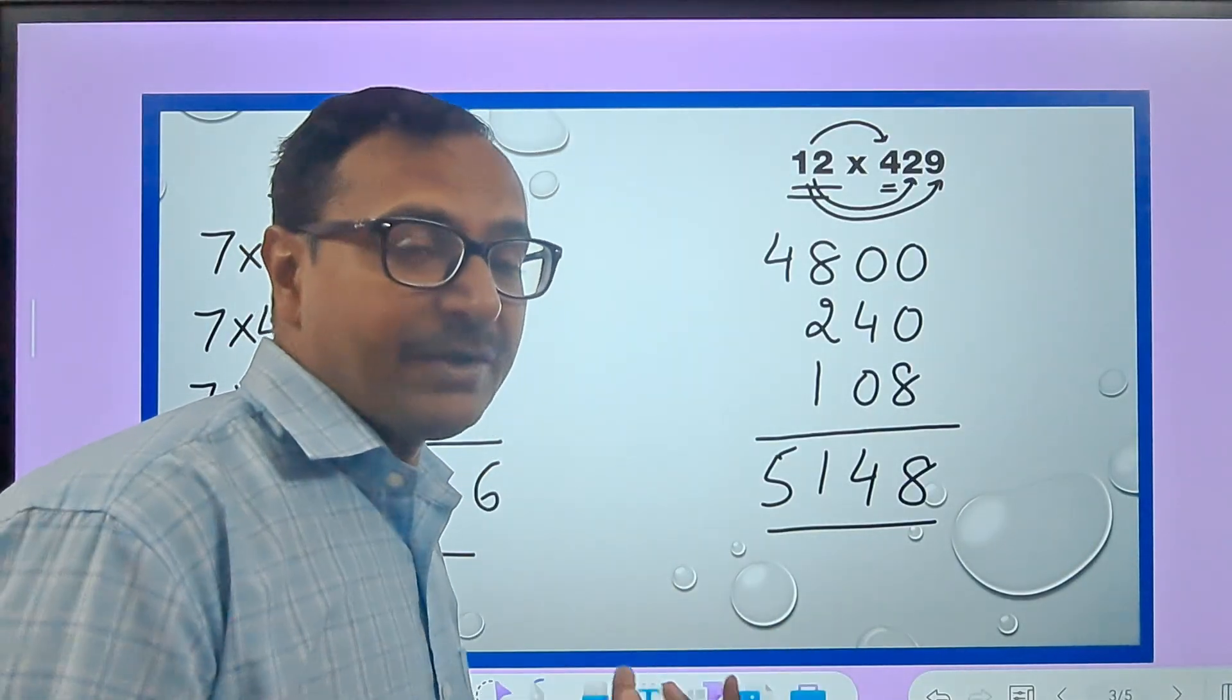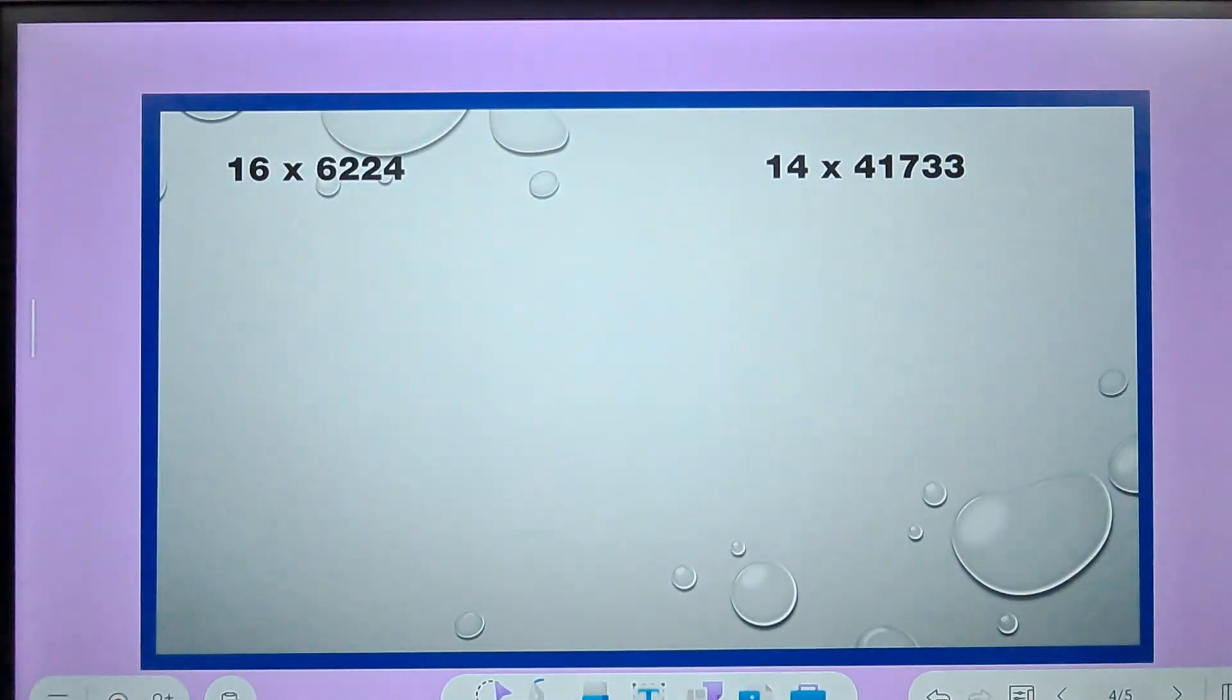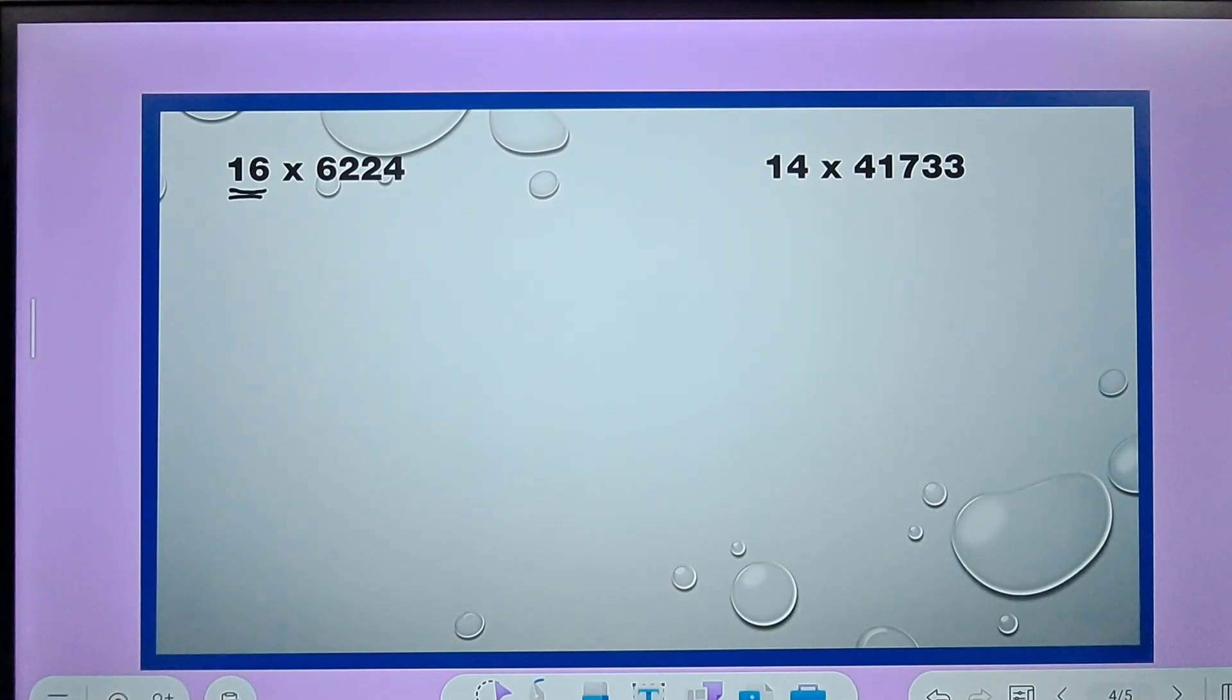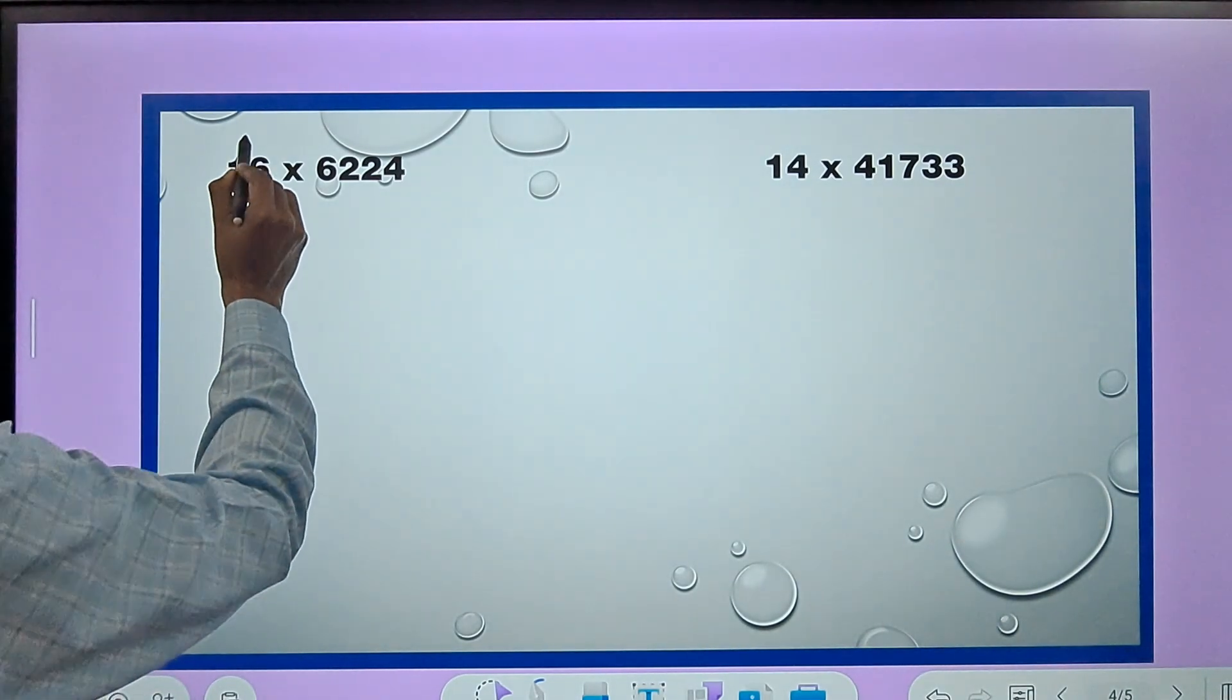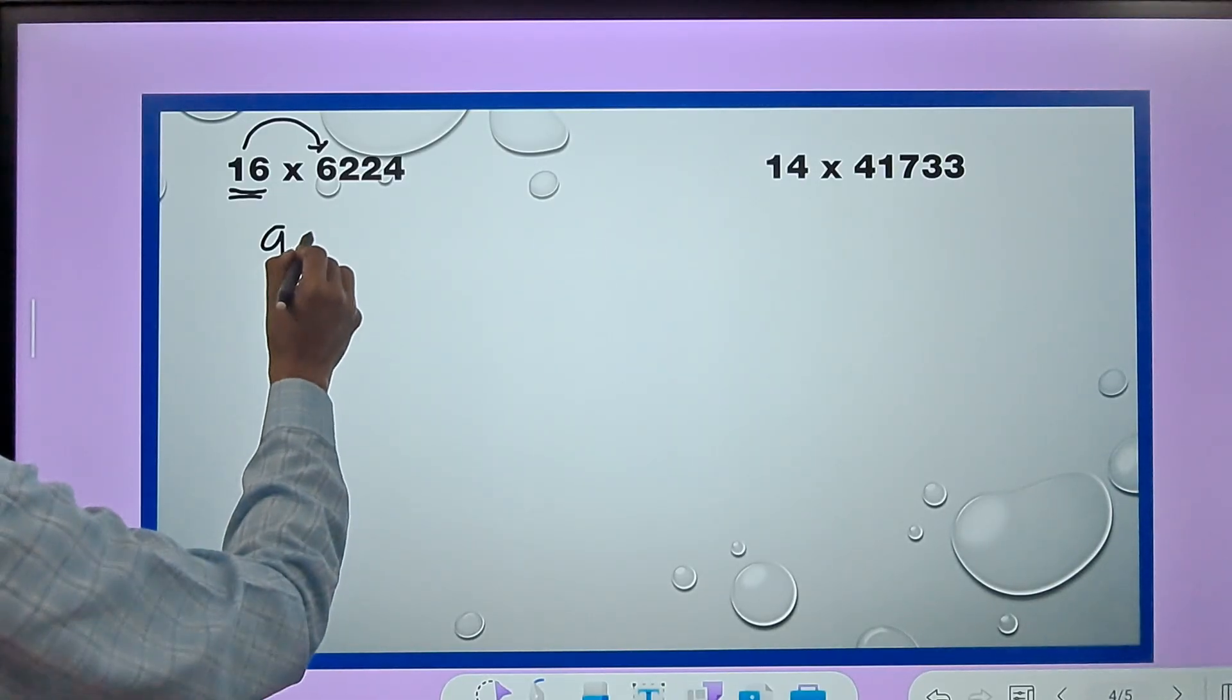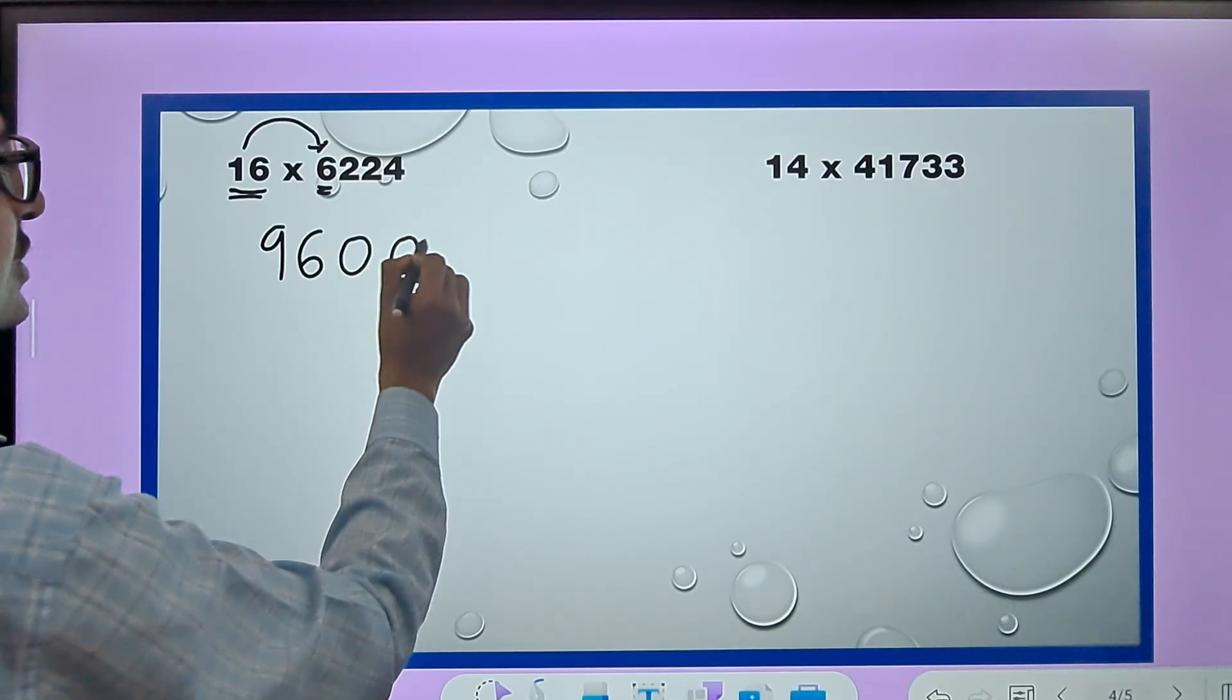Let's see some more examples which are a little bit on the lengthier side - huge numbers are involved in this. So 16 here, right? So I need to know the 16 times table. Let's do 16 times 6 - 96. I will write 96 but 6 is followed by 3 digits here so I will write 3 zeros.